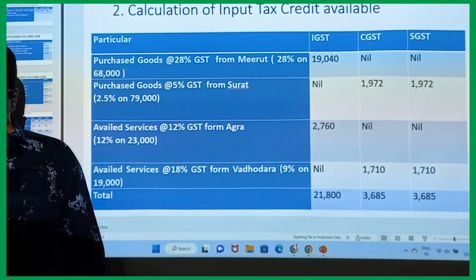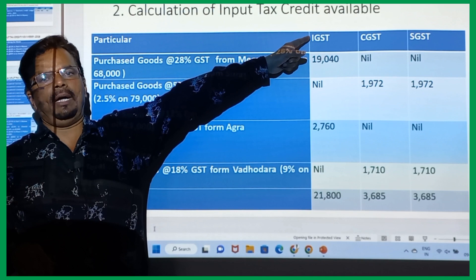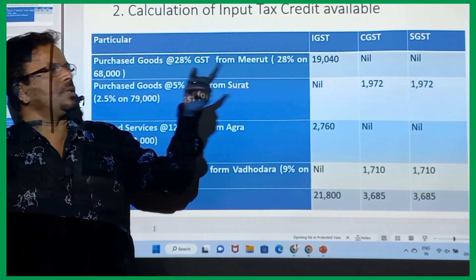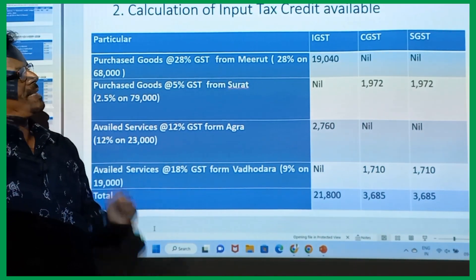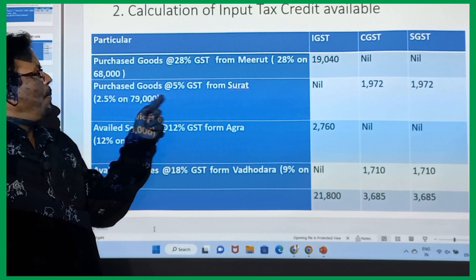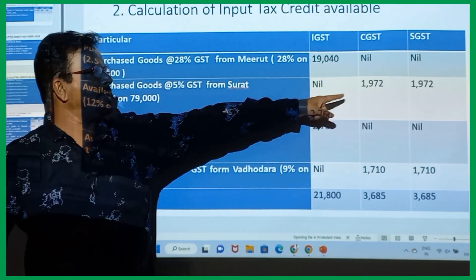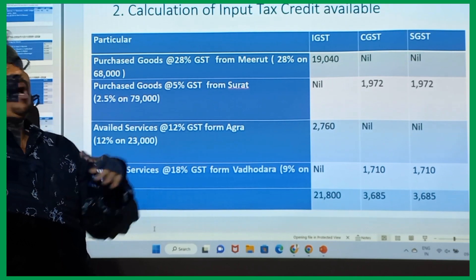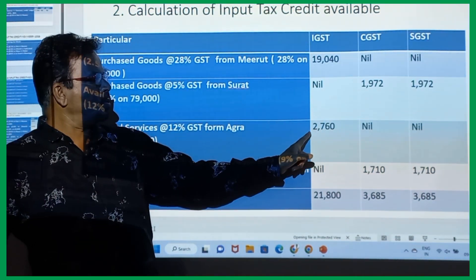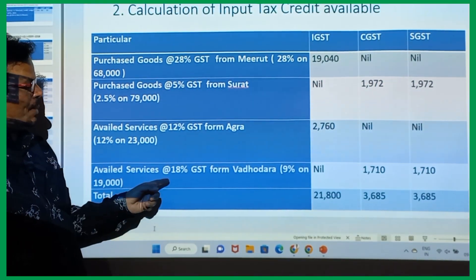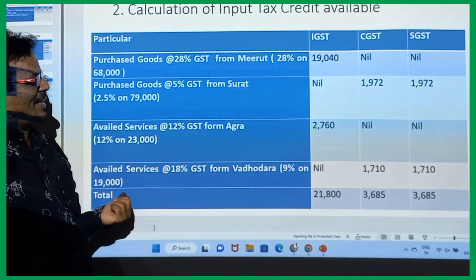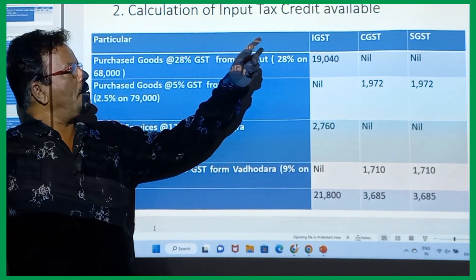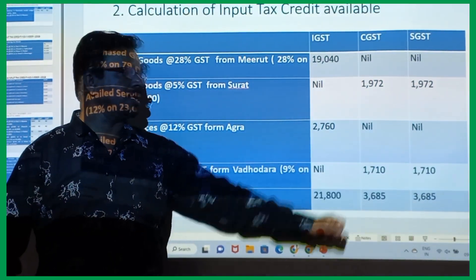Now Table 2 — tax credit available. Purchase goods at 28% from Meerut — outside Gujarat, so IGST credit: 28% on 68,000 = 19,040. CGST: nil, SGST: nil. Purchase goods at 5% from Surat — within Gujarat, so CGST and SGST credit: 2.5% each on 79,000 = 1,975 and 1,975. Availed service at 12% GST from Agra — outside Gujarat, so IGST credit: 2,760. CGST: nil, SGST: nil. Availed service at 18% GST from Vadodara — within Gujarat, so CGST and SGST credit: 855 each. Total ITC available: IGST = 21,800; CGST = 3,685; SGST = 3,685.